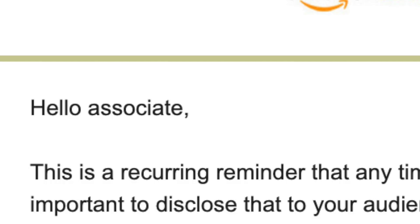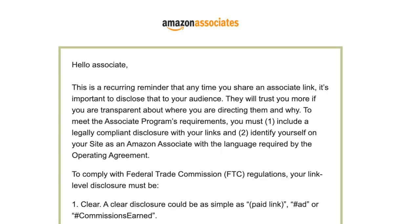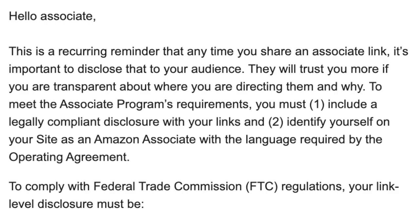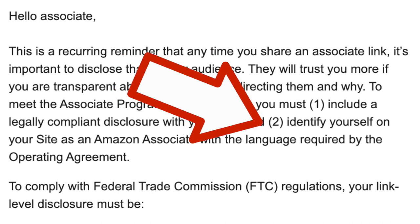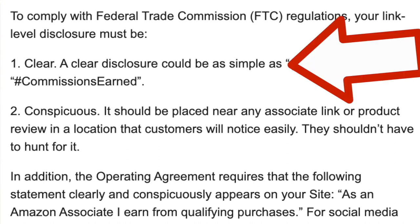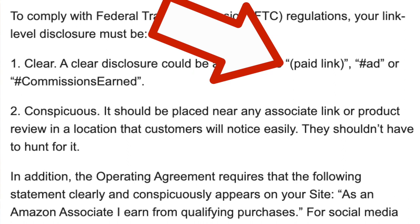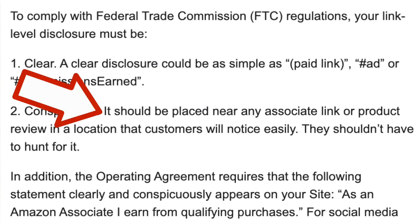Let's look at this very friendly reminder from Amazon Associates: 'Hello Associate' — nice and personal. 'This is a recurring reminder that anytime you share an associate link, it's important to disclose that to your audience. You must include a legally compliant disclosure and identify yourself on your site as an Amazon associate with the language required by the operating agreement.' A clear disclosure could be a simple 'ad,' brackets 'paid link,' hashtag 'ad,' or hashtag 'commissions earned.' It should be placed near any associate link or product review in a location that customers will notice easily.